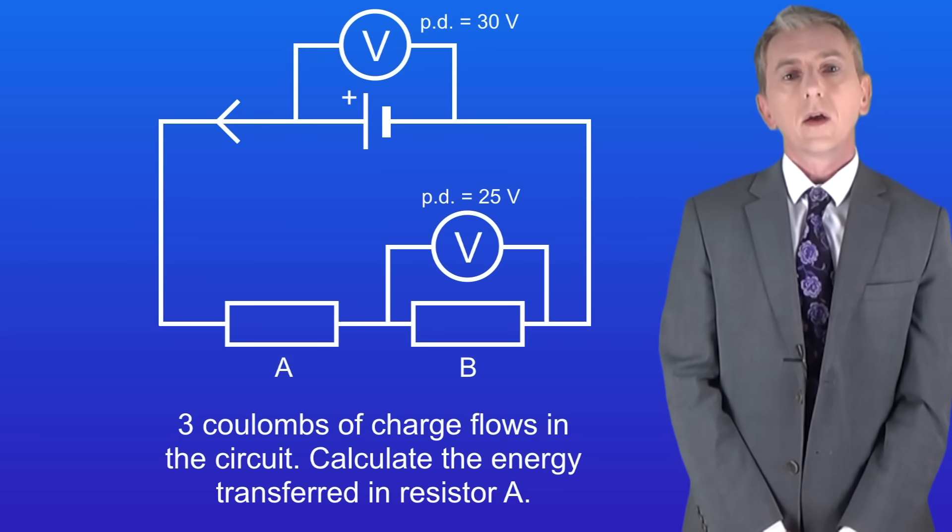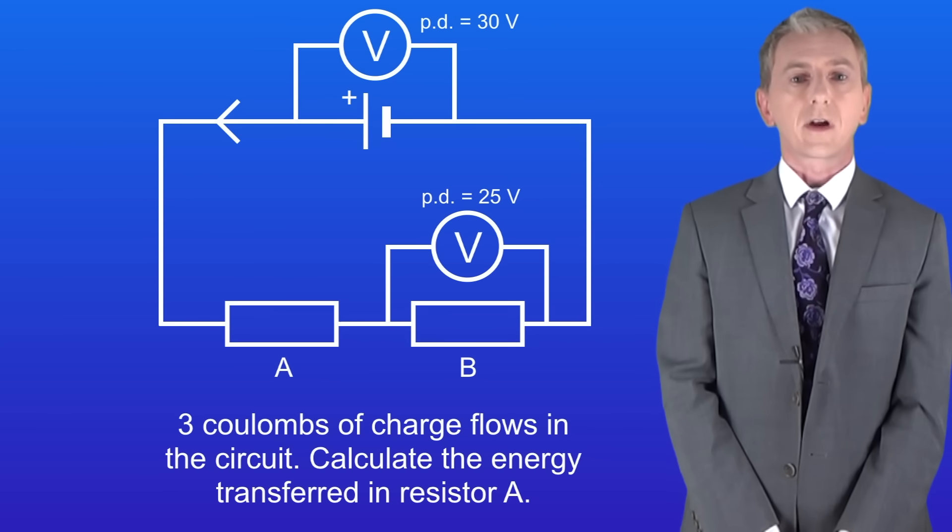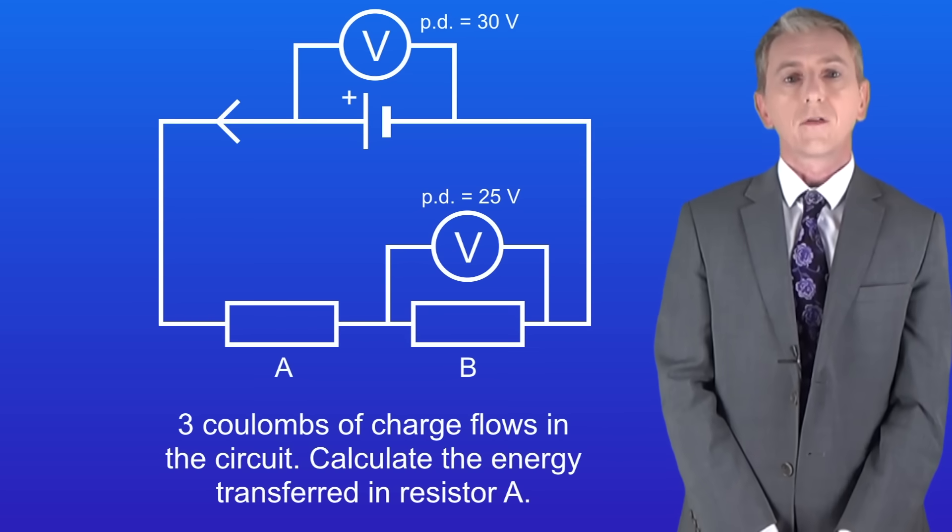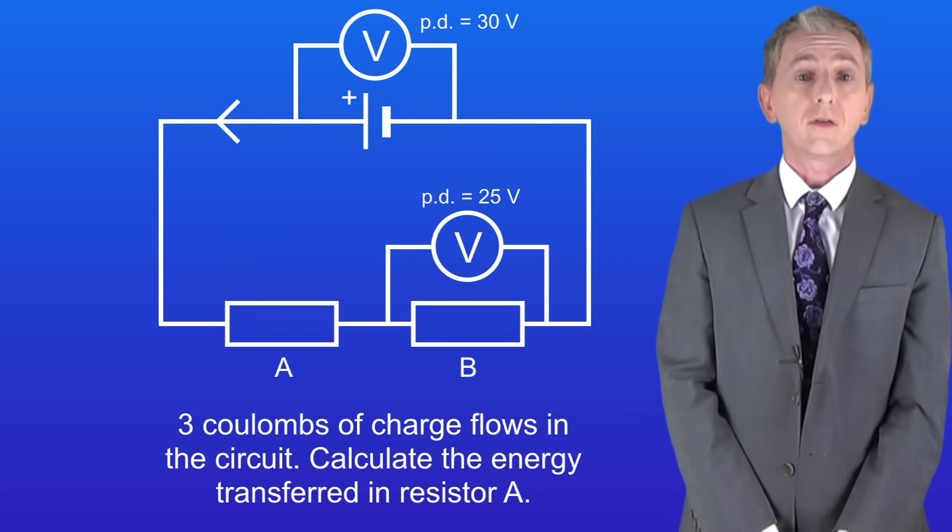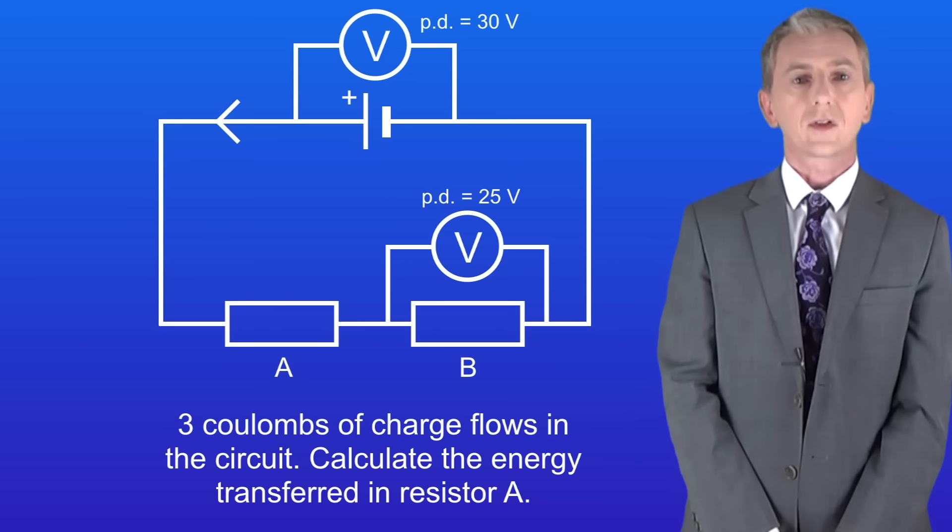Here's another question for you. Three coulombs of charge flows in the circuit. Calculate the energy transferred in resistor A. Now to answer this question first you're going to have to work out the potential difference across resistor A. So pause the video now and try this yourself.